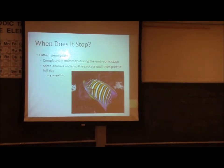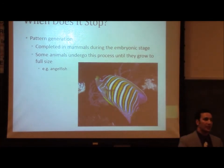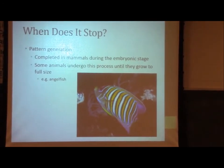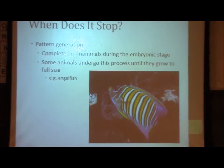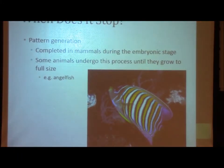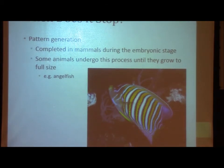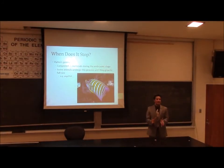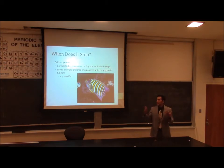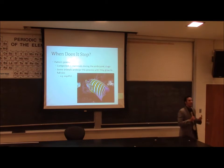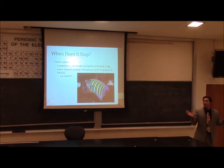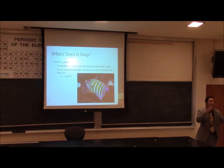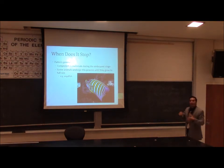When does it stop? For mammals, this whole process happens between two stages during embryonic development — the blastoma and the gastrula stages — and the transition is called gastrulation. The whole process of skin pattern formation is over by the time the embryonic stage is finished. This doesn't continue throughout the adult life of the animal.